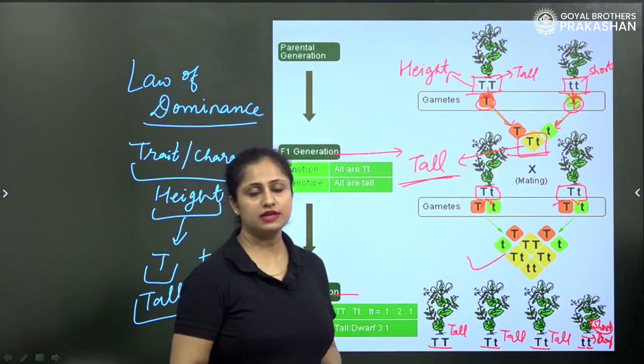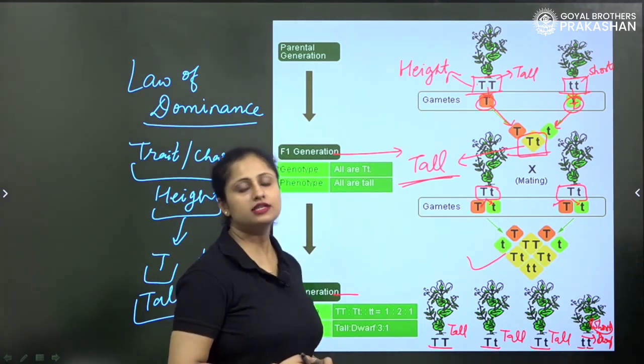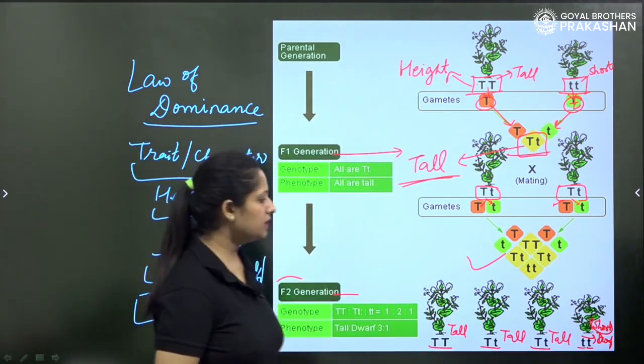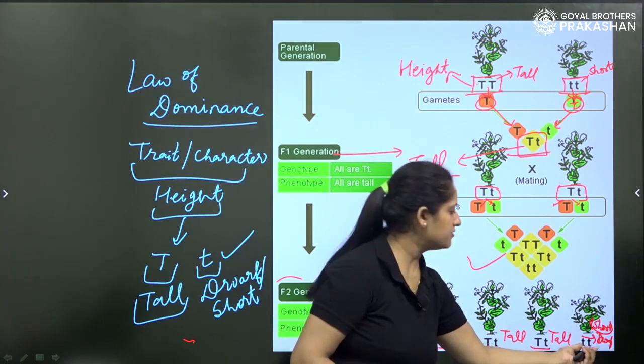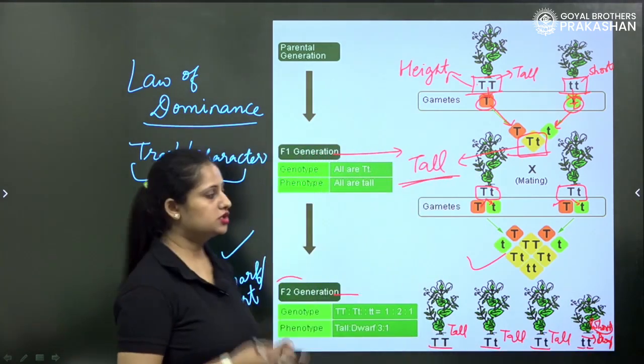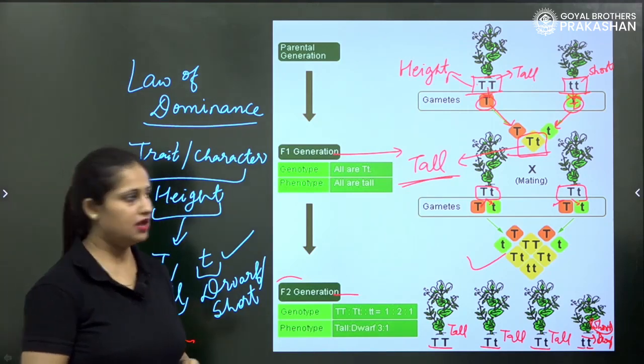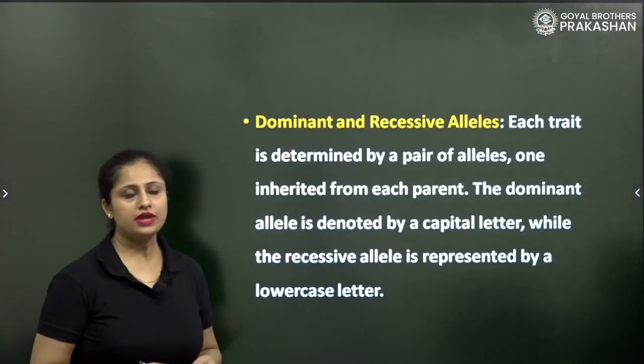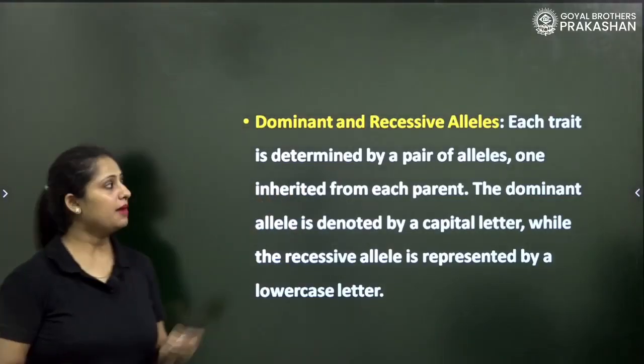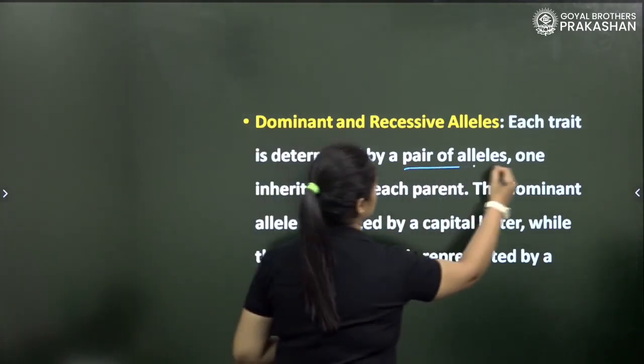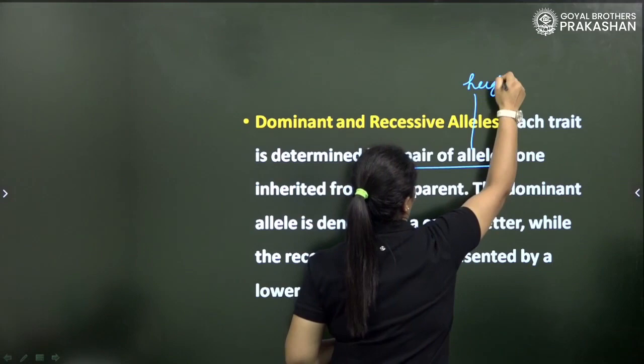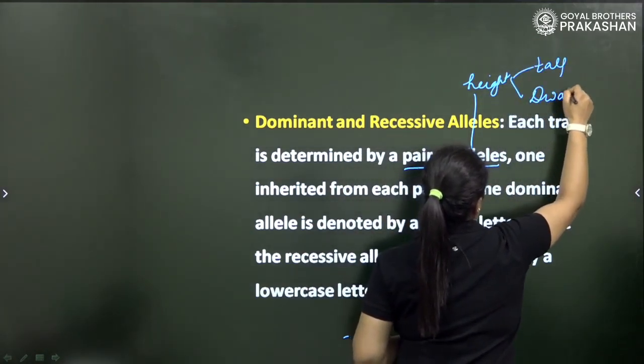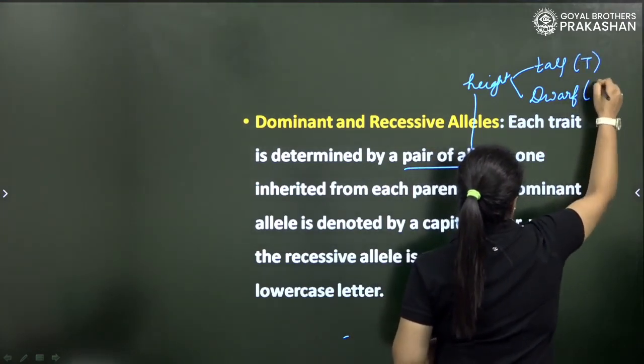But in F2 generation we have seen some recessive character also as small t was there. It means the recessive allele or recessive character was there, that is short. So short height is the recessive character but the tall height is the dominant character. Therefore we can say that each trait is determined by a pair of alleles. Here again the pair of alleles means if we talk about the height, then alleles could be for tall or for dwarf, that is T and this is small t.